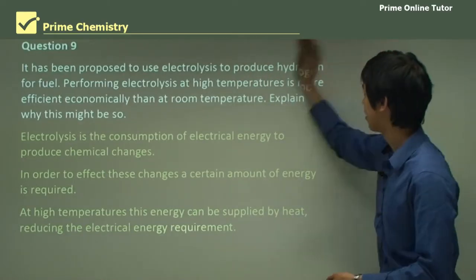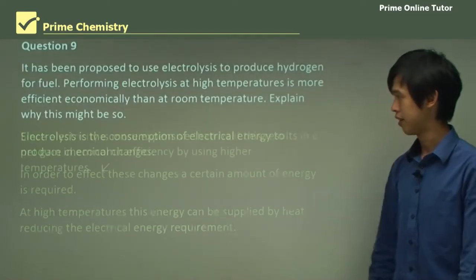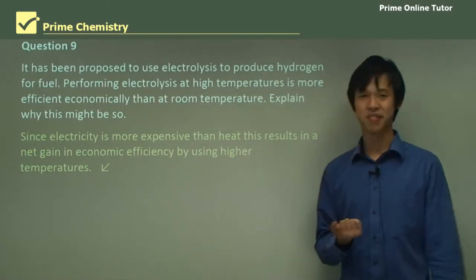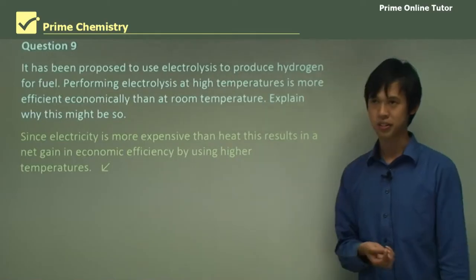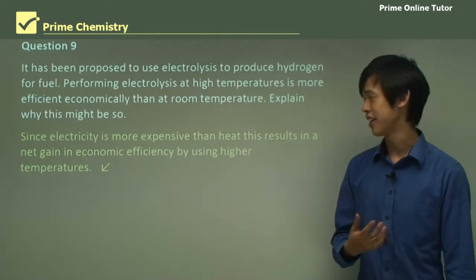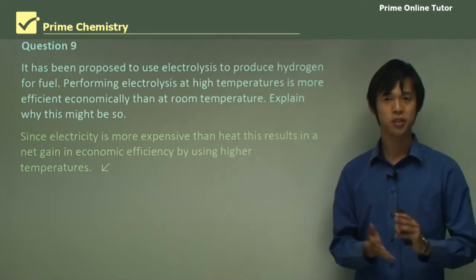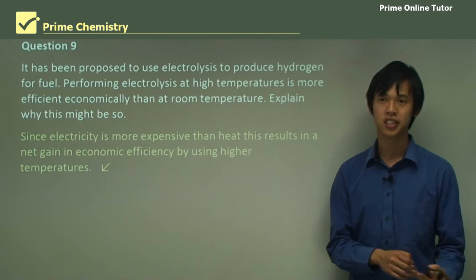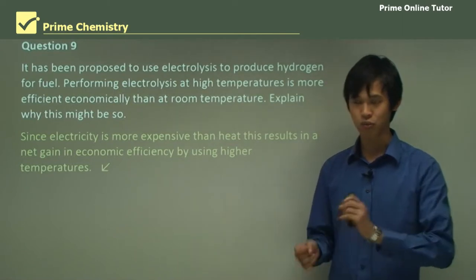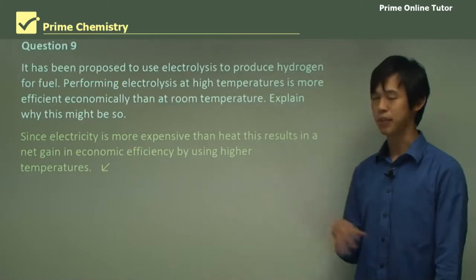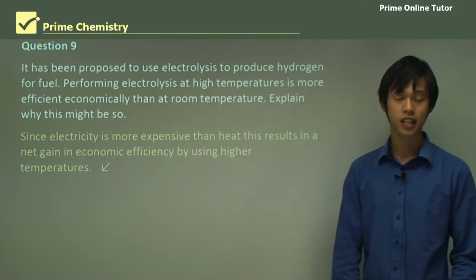We're just using one form of energy instead of another, so what's the difference? Well, electricity is much more expensive than heat in nearly every country, actually I would say in every country. This results in a net gain in economic efficiency because we're using a cheaper form of energy to substitute for a more expensive form of energy. That's why high temperature is a little bit more efficient economically than just room temperature electrolysis. So that might be something to keep your eye out on for the future.